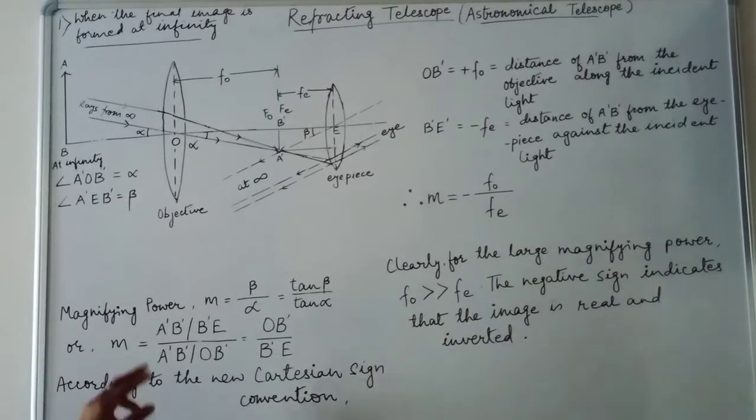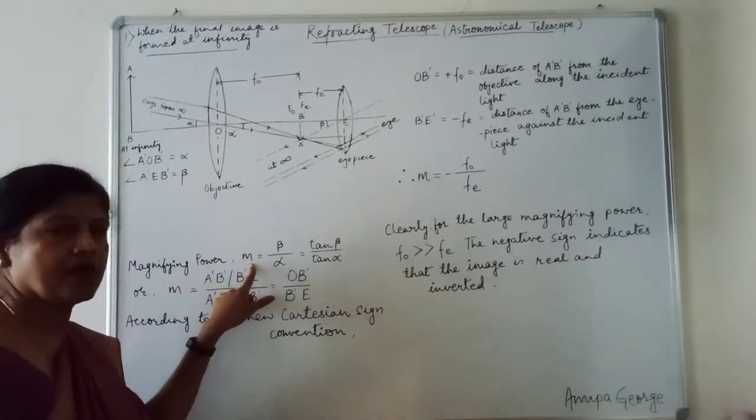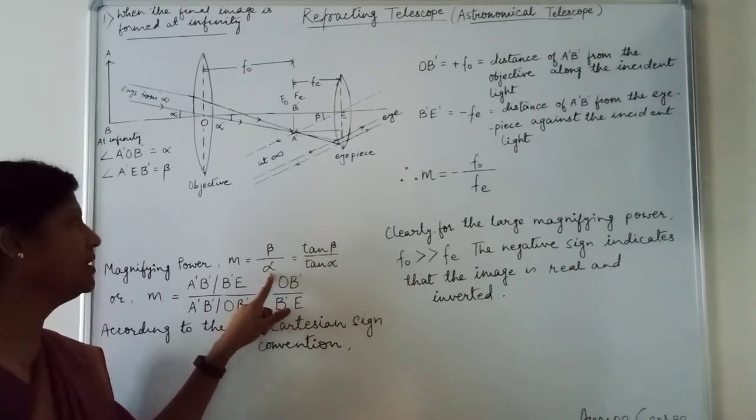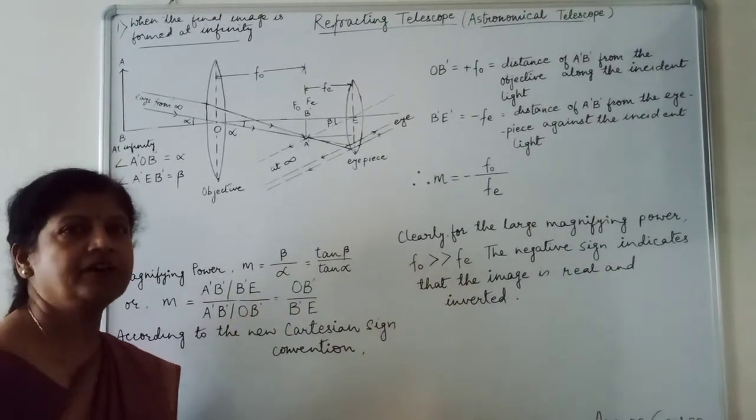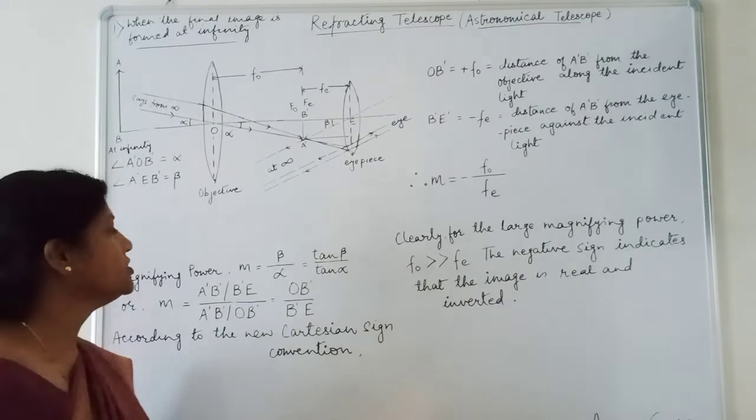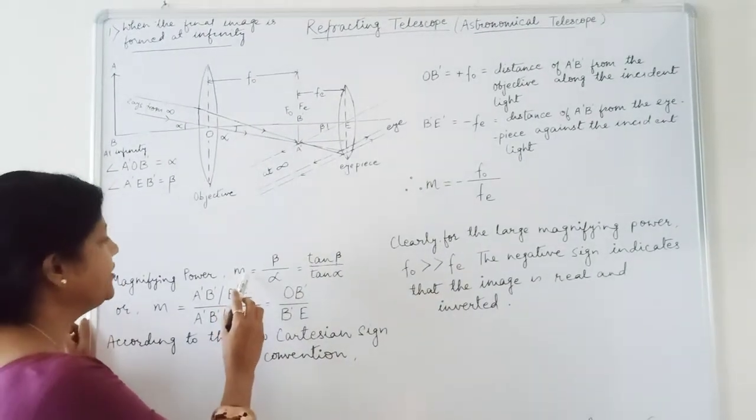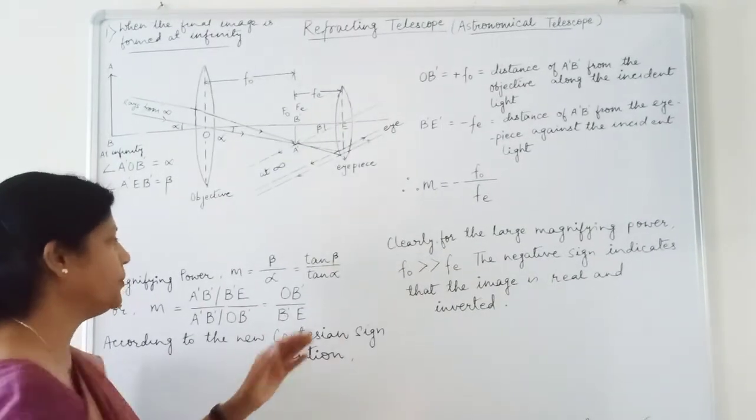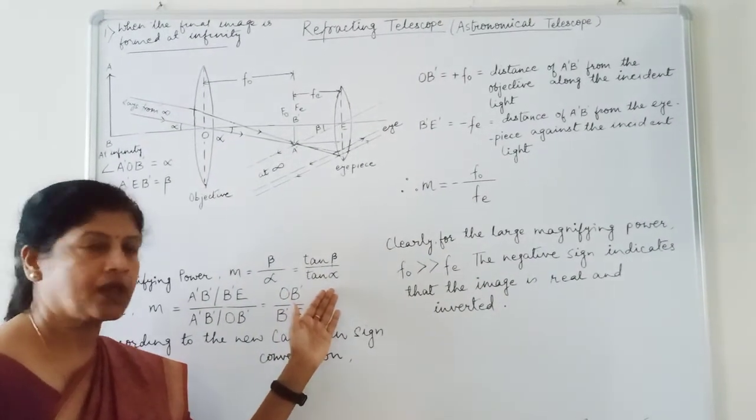for magnifying power M, we can write beta upon alpha. Since alpha and beta are very small angles, so we can write M magnifying power is equal to tan beta upon tan alpha. Now,